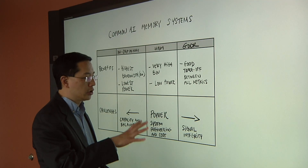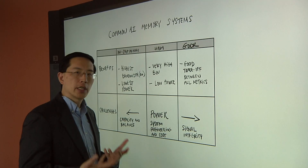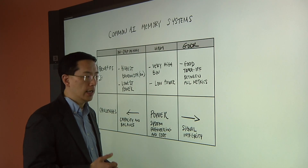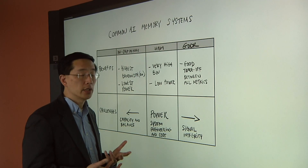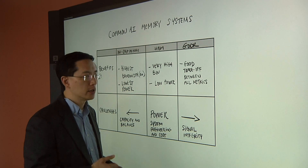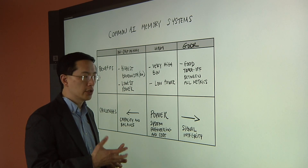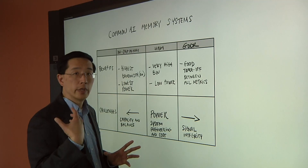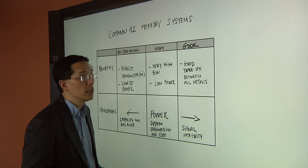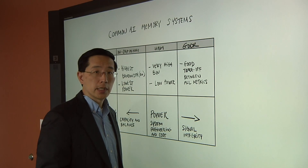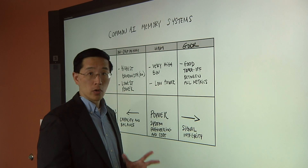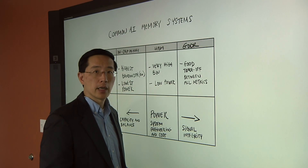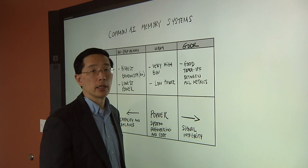For HBM, the challenge will continue to be system engineering and cost, but the added challenge is running at higher speeds. It may take changes to how things are packaged, changes to materials, and changes to how wires are constructed so we can tolerate the resistances and losses and still run at much higher speeds — similar to what we saw about two decades ago with external DRAMs. With GDDR, it's currently running up to 16 gigabits per second, and the desire is to go much faster. Following historical trends, the target will be somewhere around 32 gigabits per second. It's already challenging to maintain good signal integrity at 16 gigabits per second — it's even more challenging to get to 32.